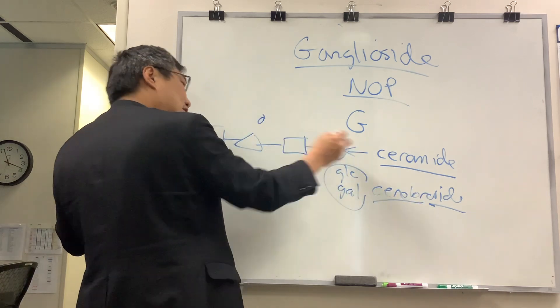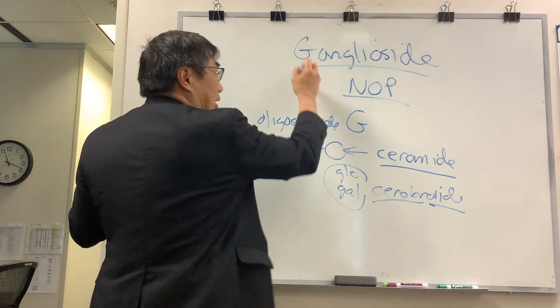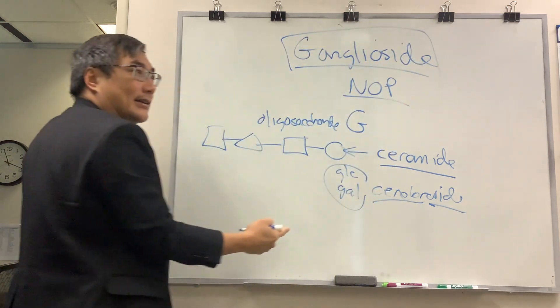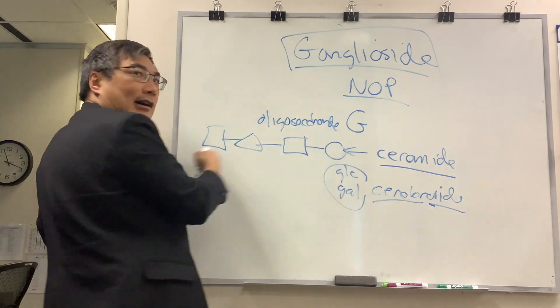But once you add on this chain, the oligosaccharide chain, that's what we call a ganglioside. So cerebroside: one sugar. Ganglioside: oligosaccharide chain.